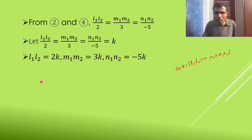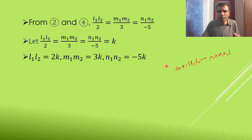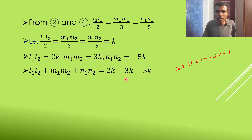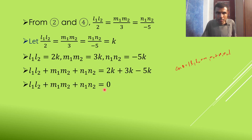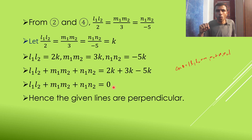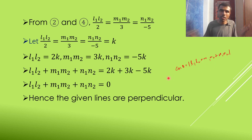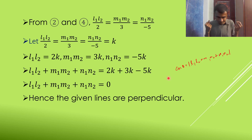Now find L₁L₂ + M₁M₂ + N₁N₂. If the lines are perpendicular, θ = 90°, cos θ = 0, meaning this sum should be 0. We get: 2K + 3K + (−5K) = 0. This equals 0, so cos θ = 0, which means θ = 90°. Hence the given lines are perpendicular.